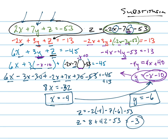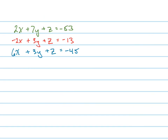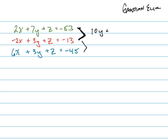The second way to do this problem is with what's called Gaussian elimination — or sometimes the Gauss-Jordan method. This method combines two equations to eliminate one of the variables, then combines another two equations to eliminate that same variable, so you end up with two equations and two variables. An easy variable to eliminate here is x, because I can combine these two equations right away. Adding them straight down gives me 10y plus 2z equals negative 66.